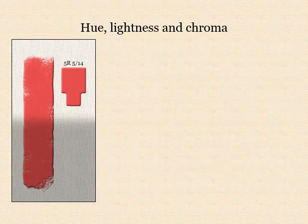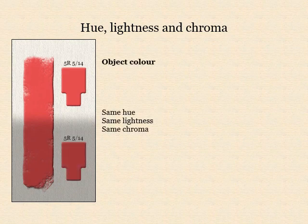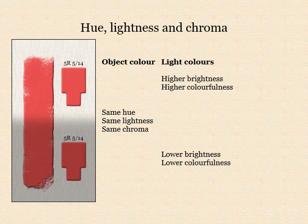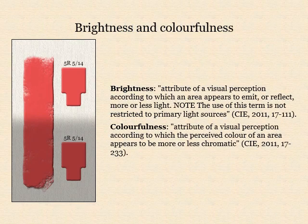Now consider what you perceive when the red stripe is unevenly illuminated. We perceive that the stripe itself does not change its intrinsic colour between the shadow and the light, and so we would expect to confirm that it matches the same Munsell chip placed beside it in the shadow and the light. Nevertheless, the stripe appears brighter and more colourful in the light than in the shadow. Brightness and colourfulness are attributes of the perceived colour of the light reaching our eyes from different areas of the object, as opposed to the colour seen as belonging to the object itself.